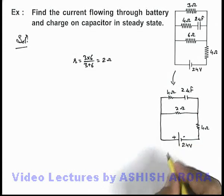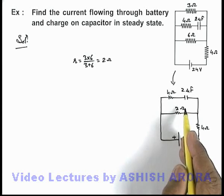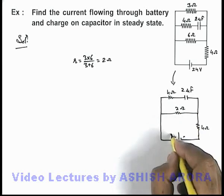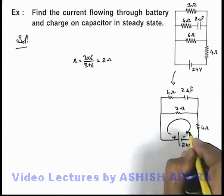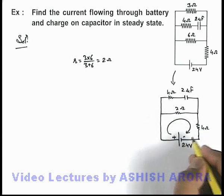Now in this situation, here we can see, in steady state no current will flow through this 2 micro farad capacitor. So in this situation the only current will be flowing through these 2 resistances, which is 6 ohm in series combination.